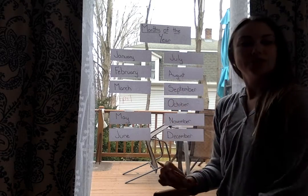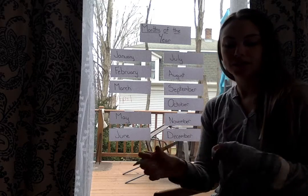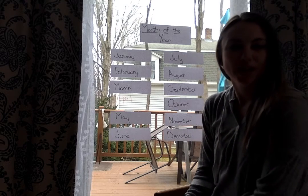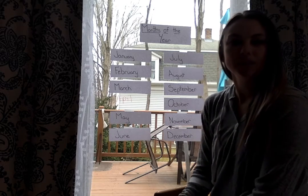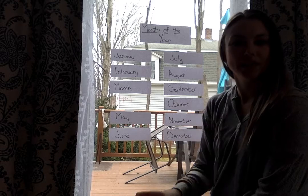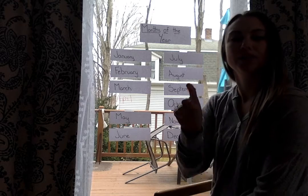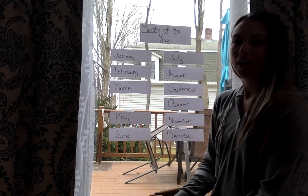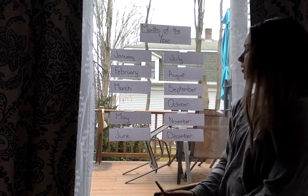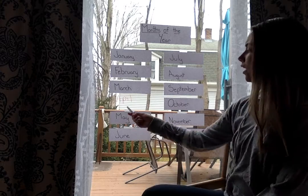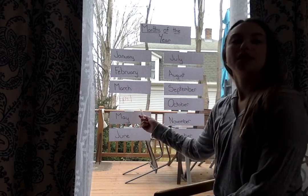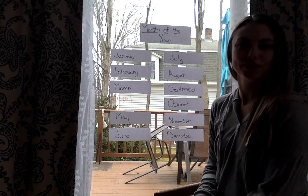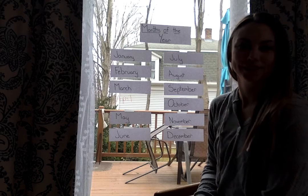For students using communication devices, you'll find the months under time — there's a button that says months — and then you can have the student press April from there. If the student can write it, they can write independently, or the student could trace it. Whatever works best for your student.